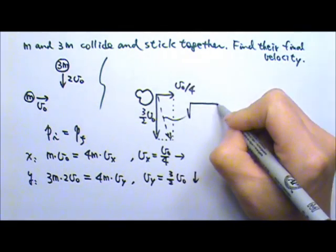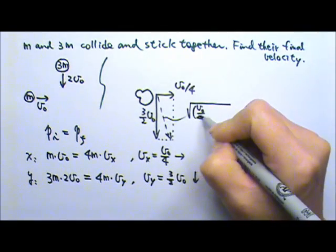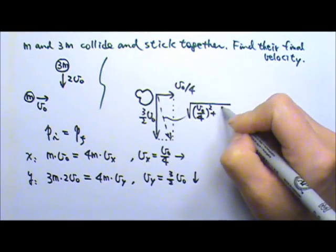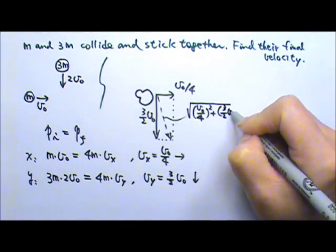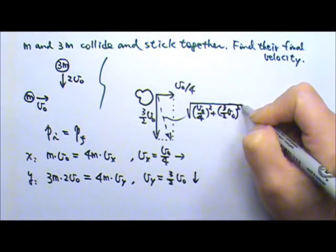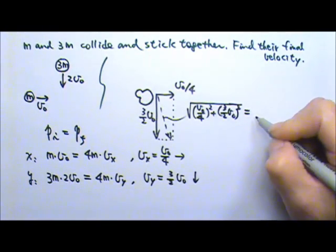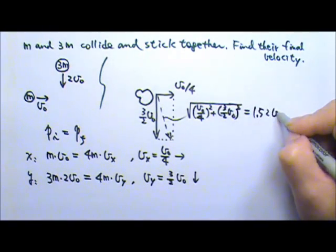So this will be the square root of the x-component squared plus the y-component squared. And this will give us about 1.52 VO.